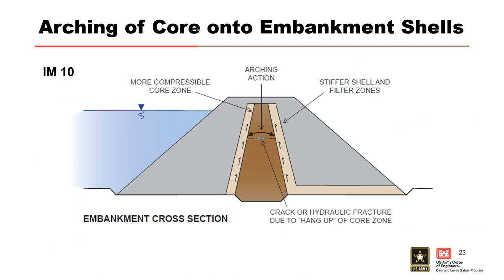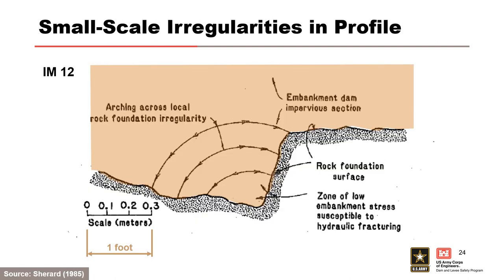For IM10, vertical stresses in the core zone can be reduced due to arching between outer shell zones which have a higher modulus. This is most likely to be a problem for cores with a very narrow width and for soils subject to collapse compression on saturation — for example, a poorly compacted soil placed dry of optimum moisture content. IM12 is for small-scale irregularities in the foundation of the core that can lead to cracking or low stresses conducive to hydraulic fracture. For cracking or low stresses to occur, the irregularities need to be persistent over most of the distance across the core and have steps greater than approximately 3 to 5 percent of the embankment height. Examples include constricting haul roads across the core and steps in slope-correction concrete.